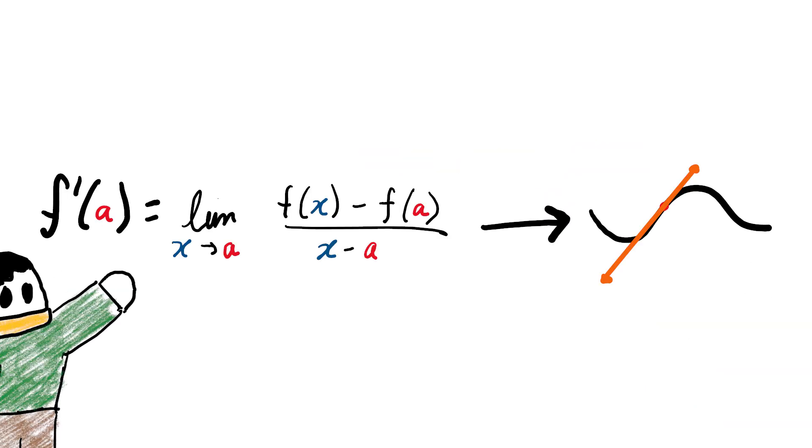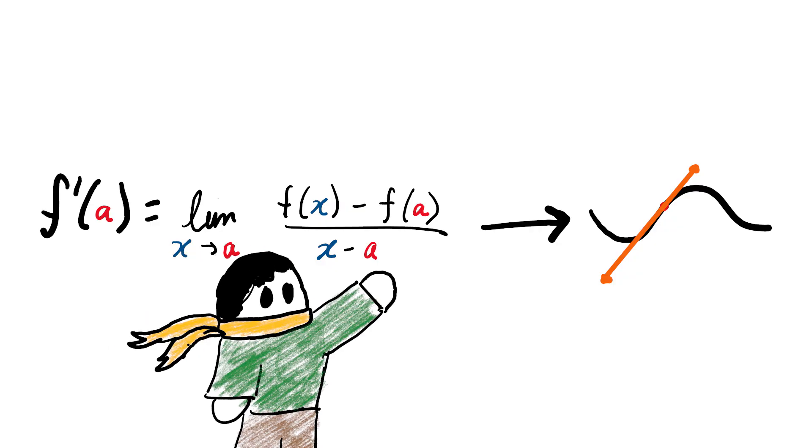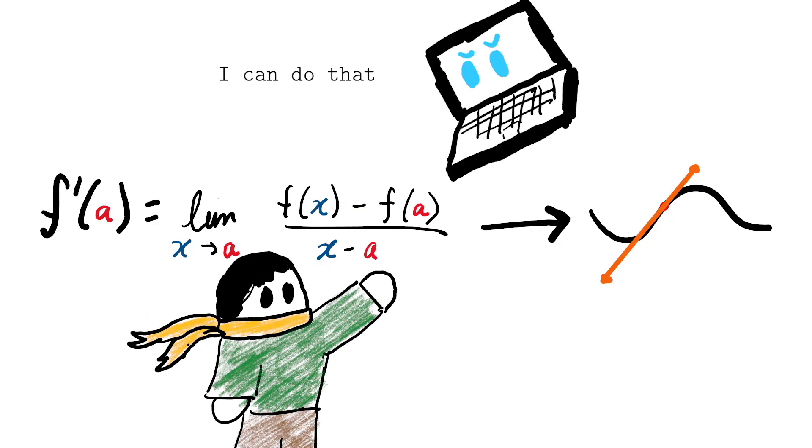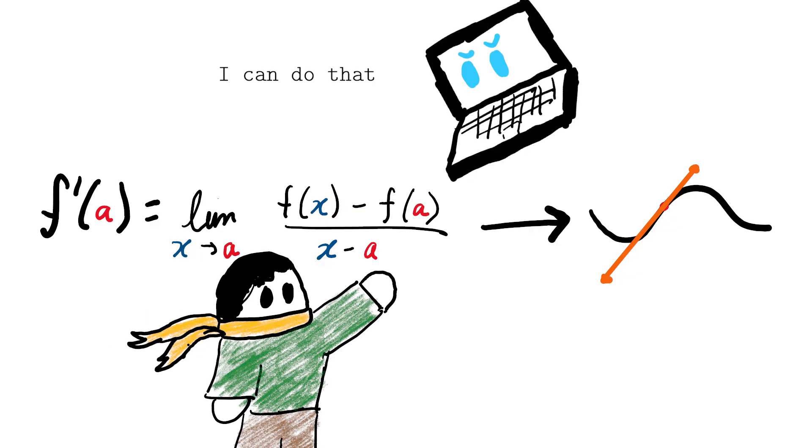So the answer seems to be that to make this line, I need to first calculate the derivative, which can be approximated on a computer, and then draw a line passing through this point of slope equal to the derivative.